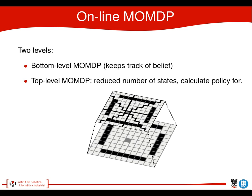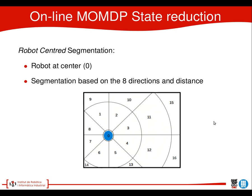An issue of POMDPs is the curse of dimensionality. In order to reduce the number of states, we use a two-level MLP in which the lower level is exactly the same as defined before — only we use it to calculate and keep track of the belief, not to calculate the policy. The top-level MLP contains a lower number of states, which are segmentations — groups of states of the lower level. We use the robot-centered segmentation, where zero is the robot position, and in each of the eight directions it can go to we make a segment. We can also segment based on distance, which always reduces the number of states.